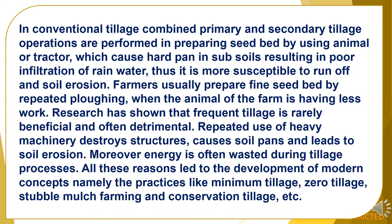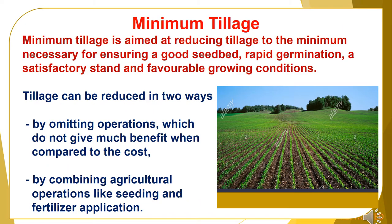All these reasons led to the development of modern concepts, namely practices like minimum tillage, zero tillage, stubble mulch farming, and conservation tillage. Minimum tillage is aimed at reducing tillage to the minimum necessary for ensuring a good seedbed, rapid germination, a satisfactory stand, and favorable growing conditions. Tillage can be reduced in two ways: first, by omitting operations which do not give much benefit compared to the cost; and second, by combining agricultural operations like seeding and fertilizer application together.